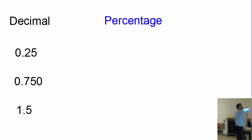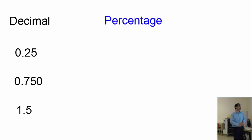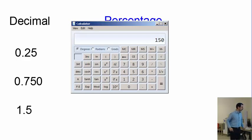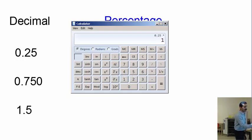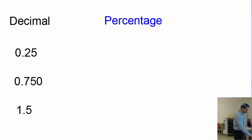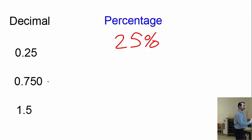Next is decimal to percentage — this part is extremely easy. All you do is multiply the decimal number by 100 and write down that value. So I see 0.25: multiply by 100 to get 25, so it's 25%.